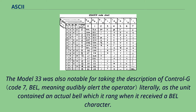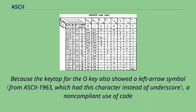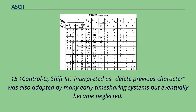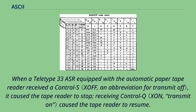The Model 33 was also notable for taking the description of Control-G literally, as the unit contained an actual bell which it rang when it received a bell character. Because the keytop for the O key also showed a left arrow symbol, a non-compliant use of code 15 interpreted as delete previous character was also adopted by many early timesharing systems but eventually became neglected. When a Teletype 33 ASR equipped with the automatic paper tape reader received a Control-S, it caused the tape reader to stop; receiving Control-Q caused the tape reader to resume.